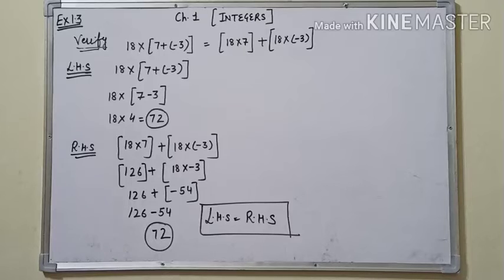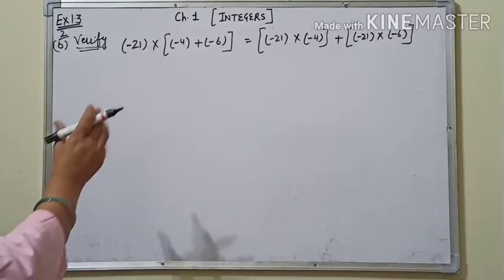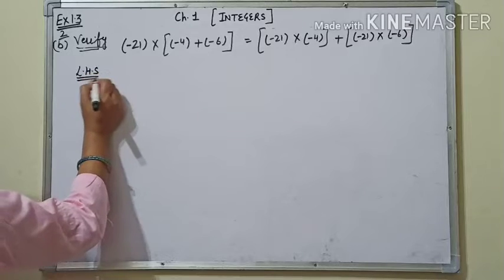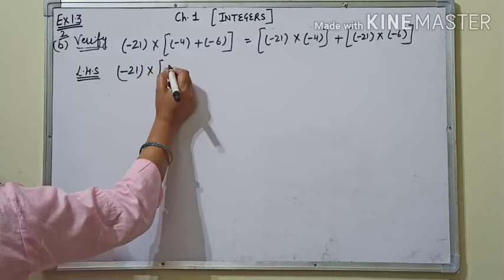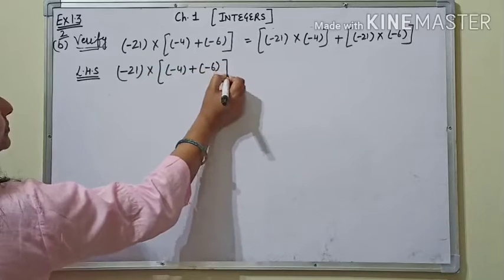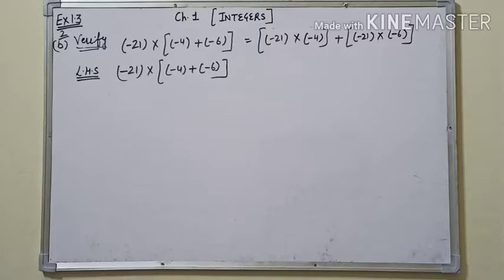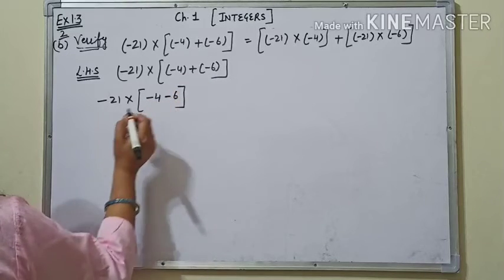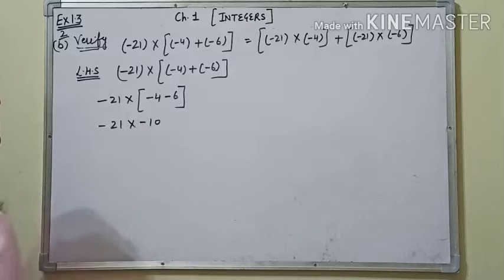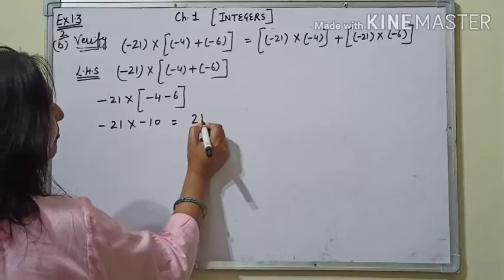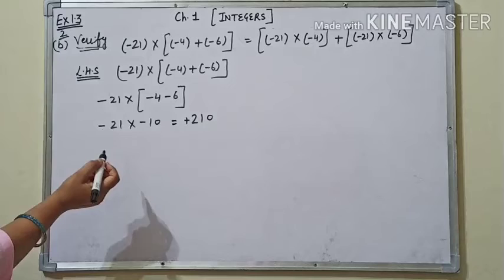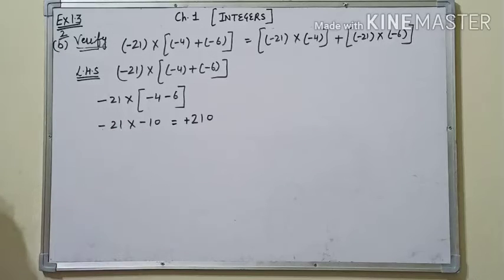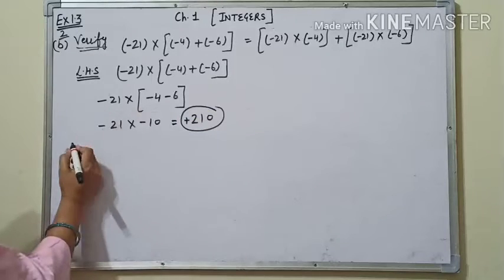अब हम इसका second part करेंगे। LHS लेते हैं: (-21) into ((-4) + (-6)). पहले small bracket open करते हैं: (-21) into ((-4) + (-6)). (-21) into (-10). Minus 4 और minus 6 same signs हैं, तो हम numbers को add कर देंगे = 10, तो आगया 210 positive — because two minus signs हैं, तो even signs, positive answer। यह हमारी LHS solve हुई।